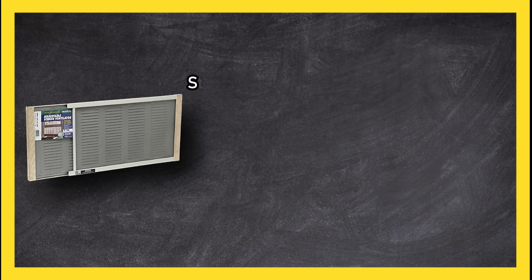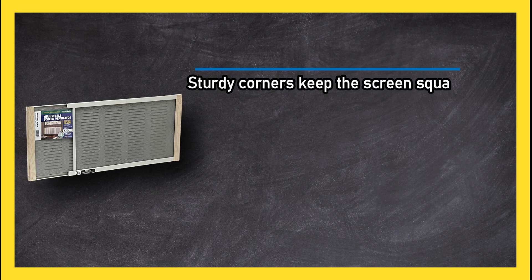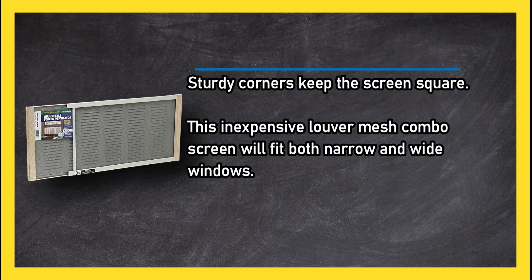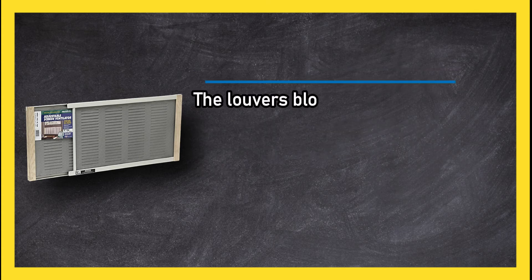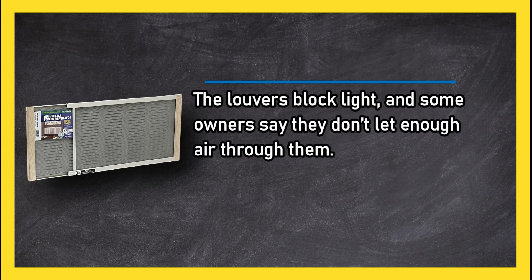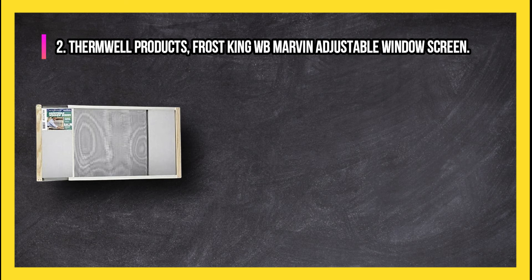Sturdy corners keep the screen square. This inexpensive louver mesh combo screen will fit both narrow and wide windows. The louvers block light and some owners say they don't let enough air through them.